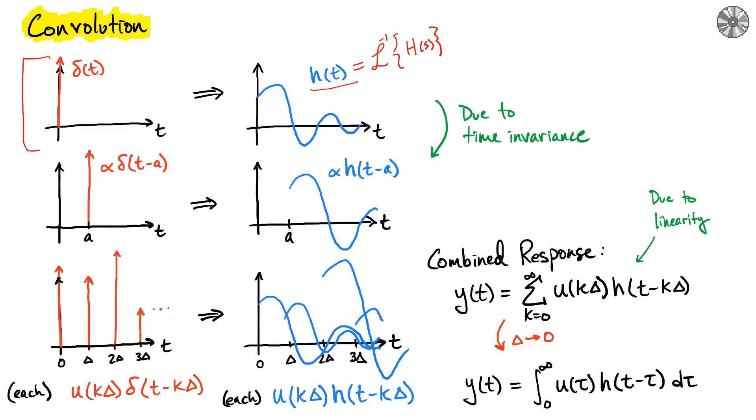One characteristic of time invariance is that because our system doesn't explicitly depend on time, if we apply our delta function at time t equals a, the response occurs in the exact same way except shifted over by time a. In addition, if we multiply by a factor of alpha, we scale the response by alpha—this is due to linearity.